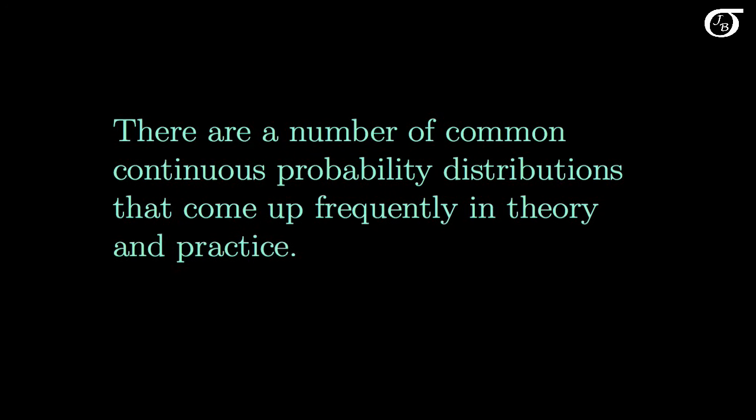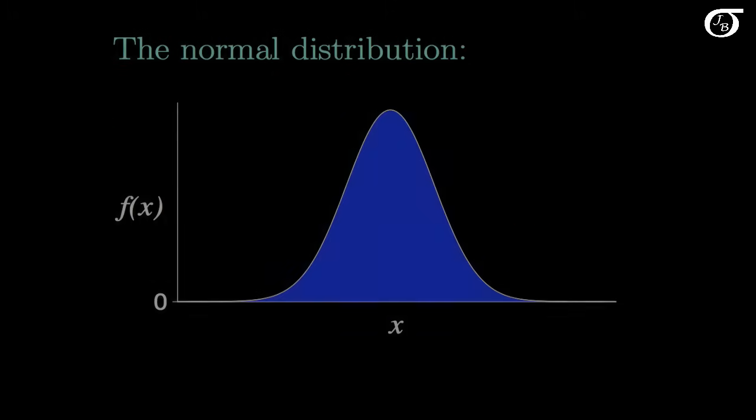There are a number of common continuous probability distributions that come up frequently in theory and practice. One very common and extremely important continuous probability distribution is the normal distribution, and it looks like this.